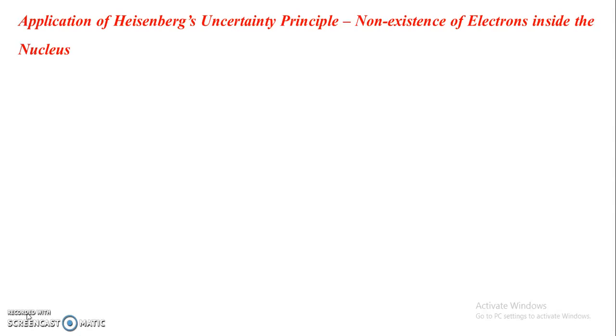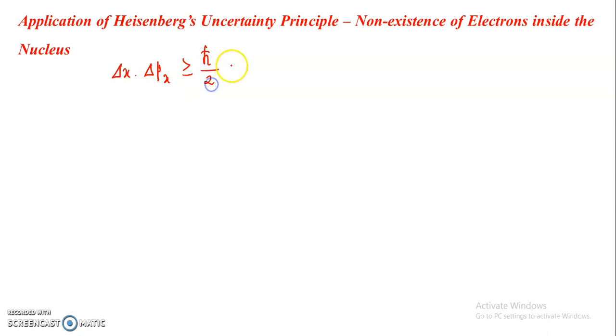We can use Heisenberg's uncertainty principle to show that electrons cannot exist inside the nucleus. Mathematically, we write the uncertainty principle as: delta x times delta px is greater than or equal to h-cross by 2, where delta x is the uncertainty in position and delta px is the corresponding uncertainty in momentum in the x direction.